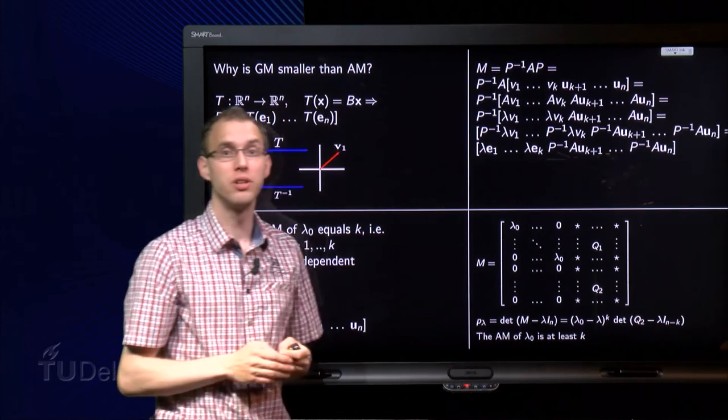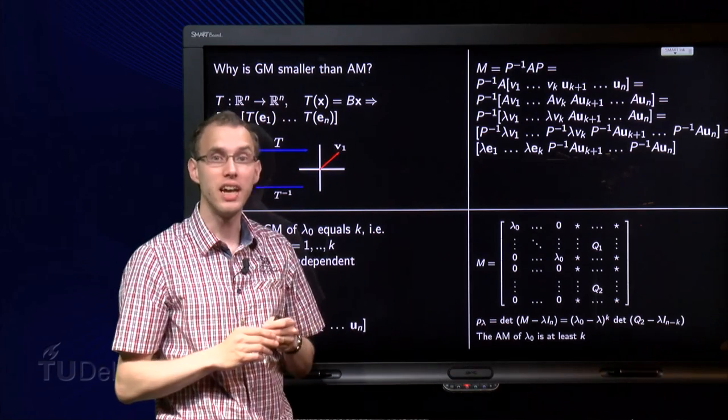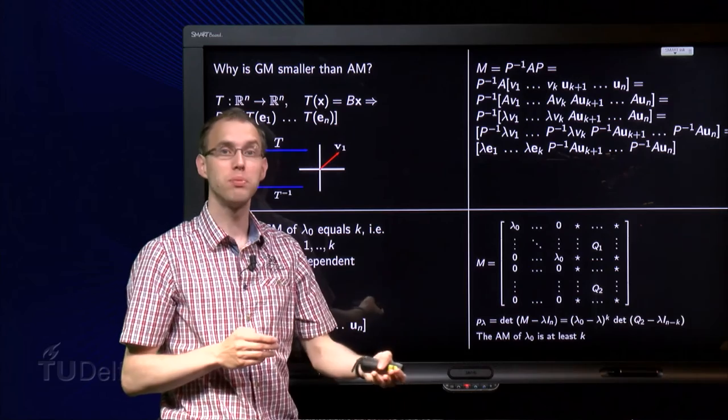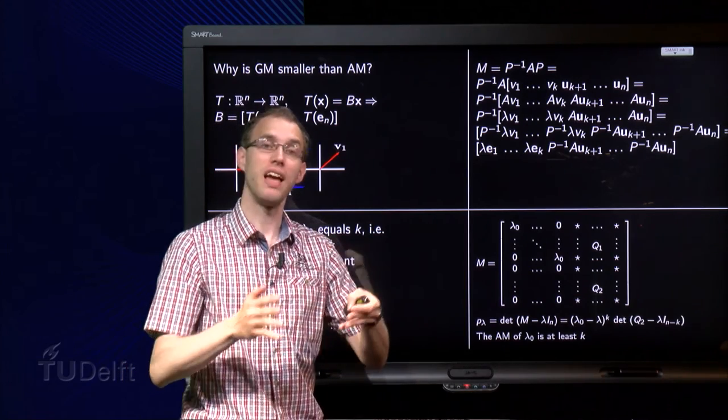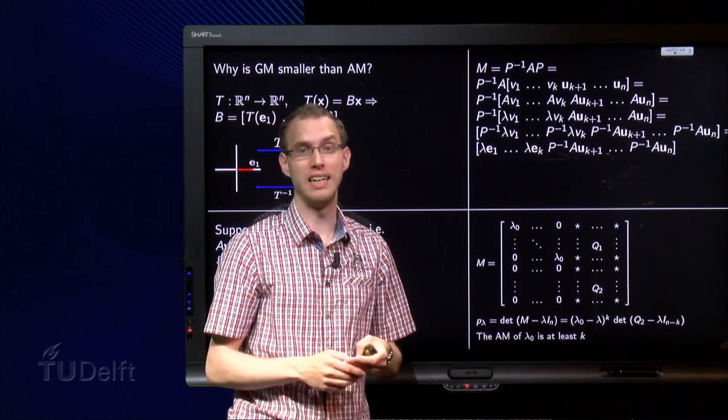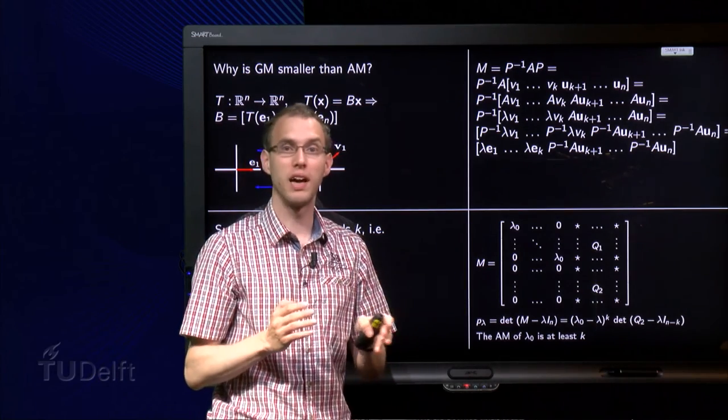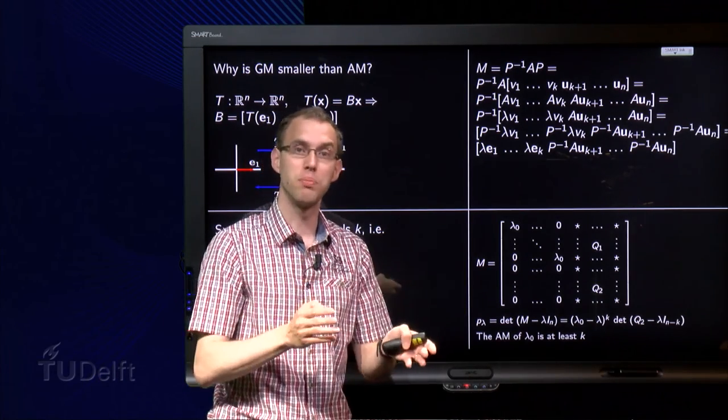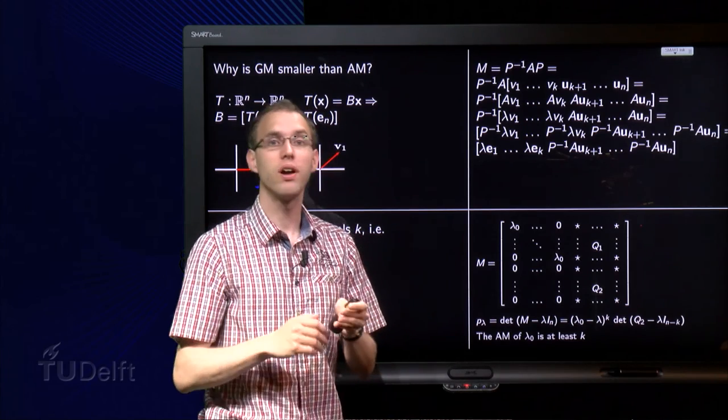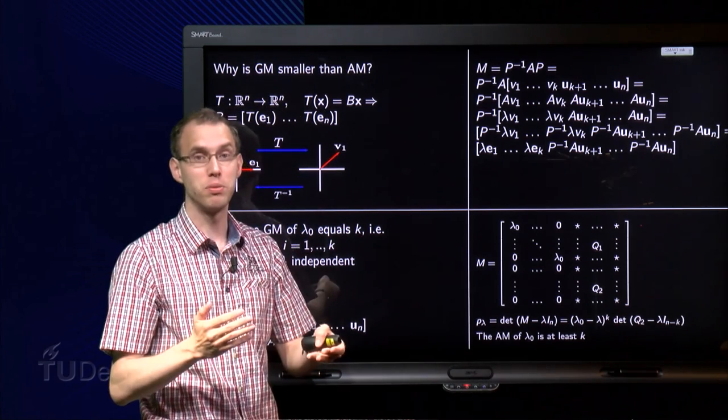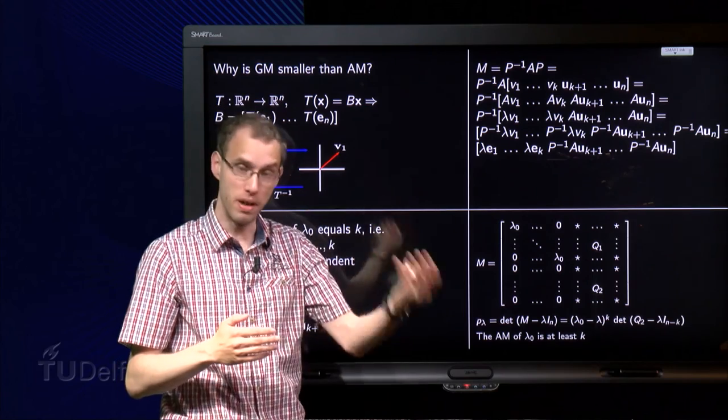So the algebraic multiplicity of λ₀ is at least k of M. But the eigenvalues of M and A are the same. So the algebraic multiplicity of λ₀ of A is also at least k. Well, the geometric multiplicity is equal to k. That means that the geometric multiplicity is smaller or equal than the algebraic multiplicity. Because that one is bigger than k.